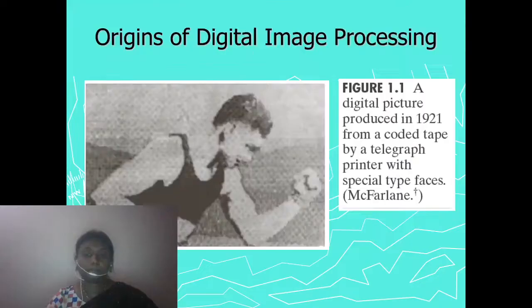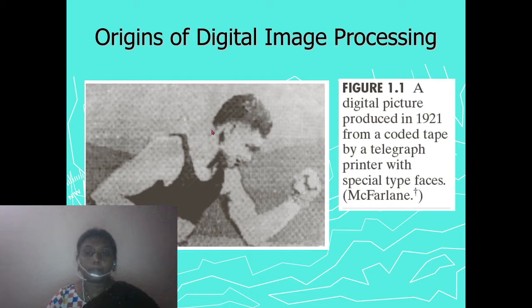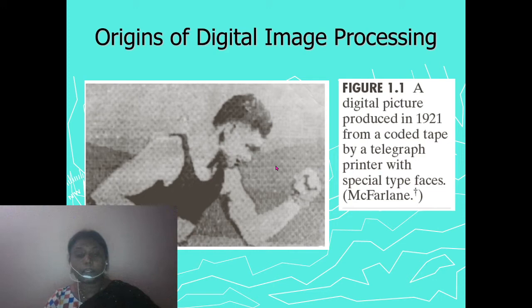A pixel is an element of the digital image. To understand why image processing came into existence, consider this picture — a digital picture produced in 1921 from a coded tape by a telegraph printer with special typefaces.